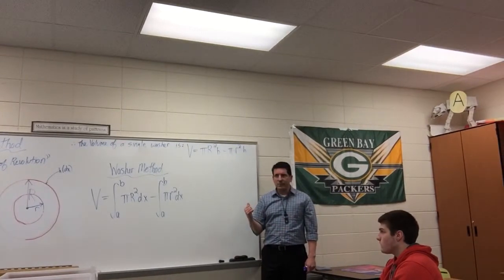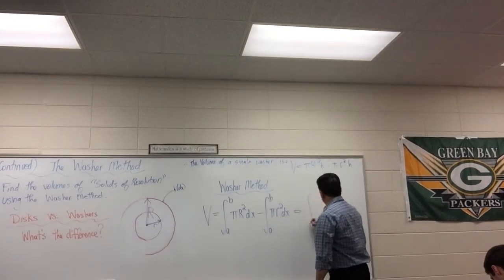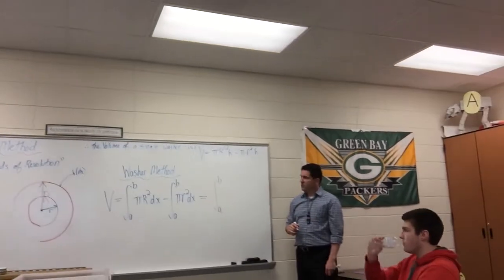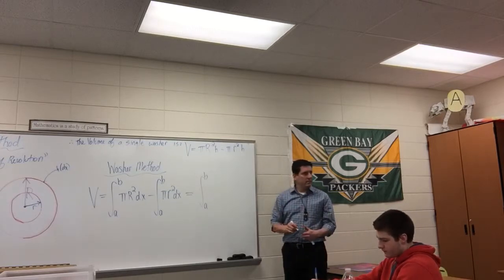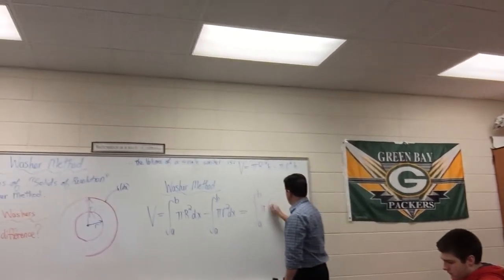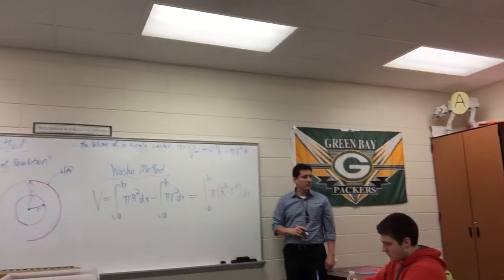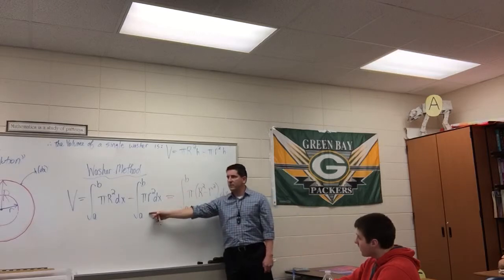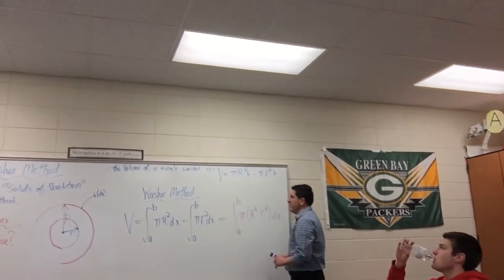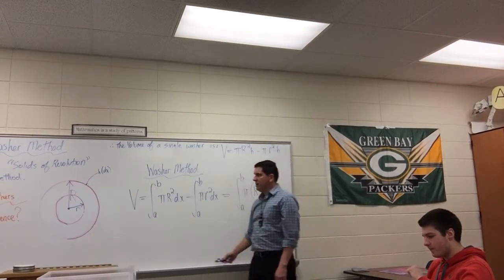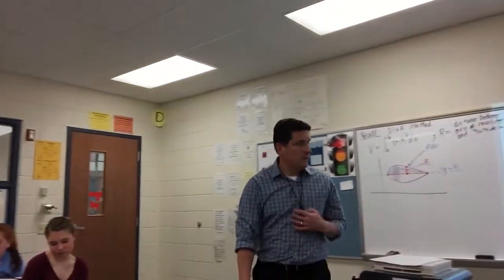In other words, take the volume of the big disk and subtract off the volume of the little disk. Can we shorten this up? Yes — this simplifies to the integral from A to B of pi times (big R squared minus little r squared) dx. That integral is the same — we're just factoring out pi. This is the washer method, where we always have to identify what big R and little r are.